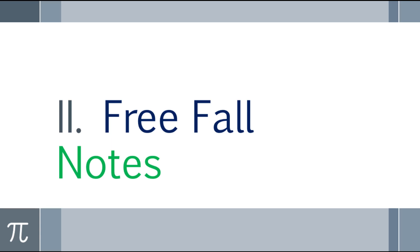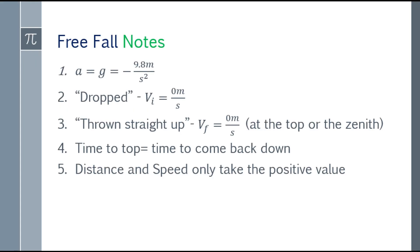Now for free fall notes. First, acceleration due to gravity is equal to negative 9.8 meters per second squared — that is always our acceleration. Second, if the object is dropped, the initial velocity is 0 meters per second. Third, if it's thrown straight up, the final velocity at the very top will be 0 meters per second.